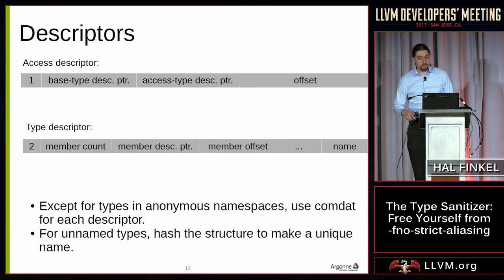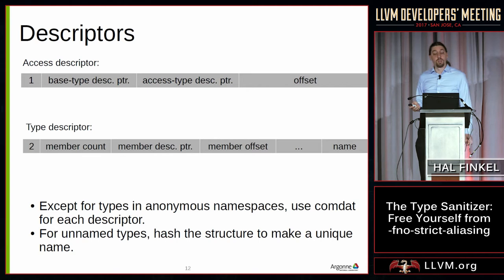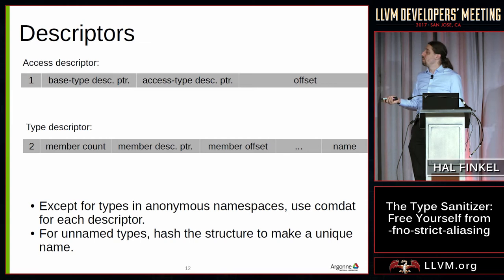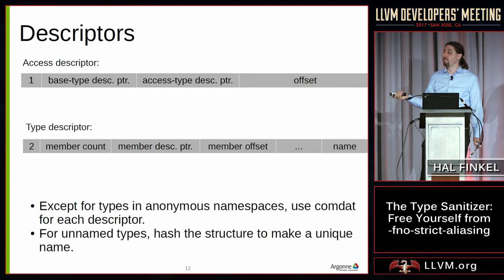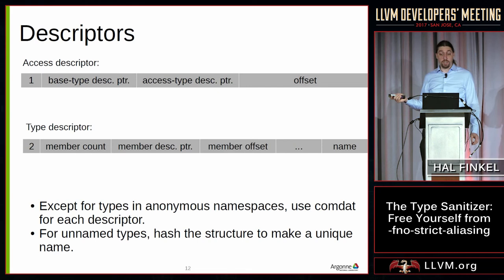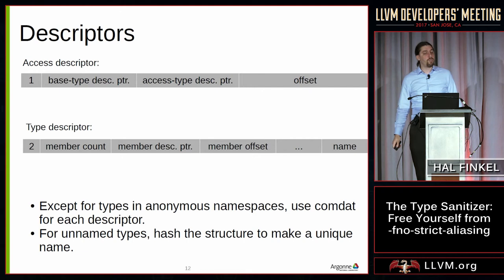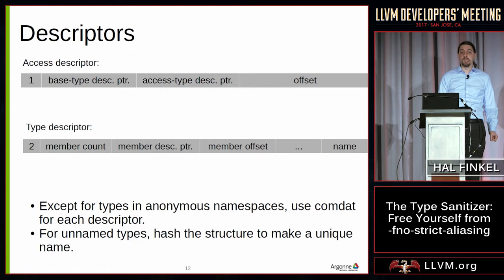The descriptors used by the type sanitizer are conceptually close to TBAA metadata — essentially a direct encoding. Access descriptors store the pointer to the base descriptor, the access site descriptor, and the offset, just like TBAA metadata. Type descriptors store the same information as in TBAA, except the count must be explicitly stored. These are generated in comdat globals in each instrumented module. For anonymous types, we do a recursive structure hash to produce a unique name for comdat sections and global naming.